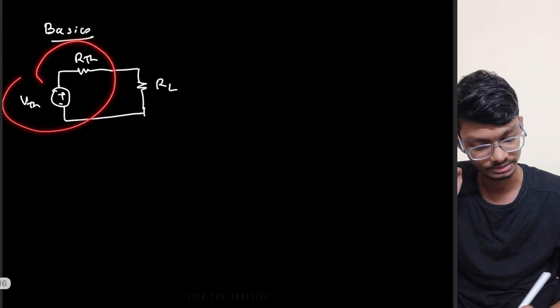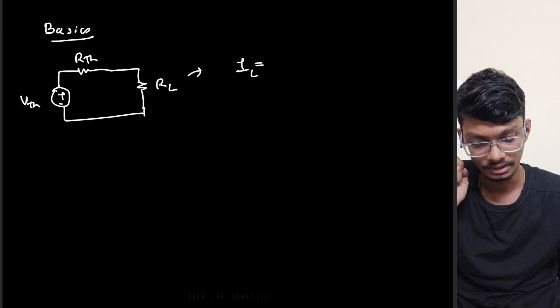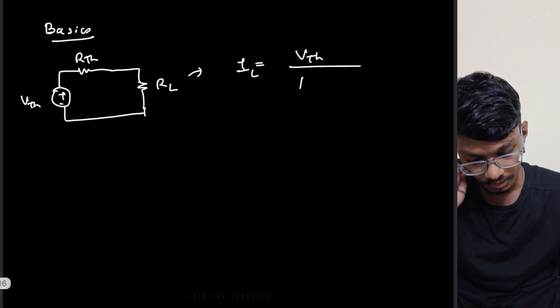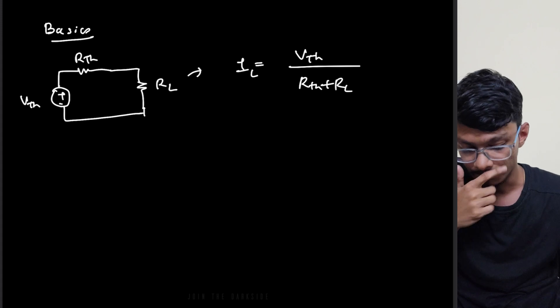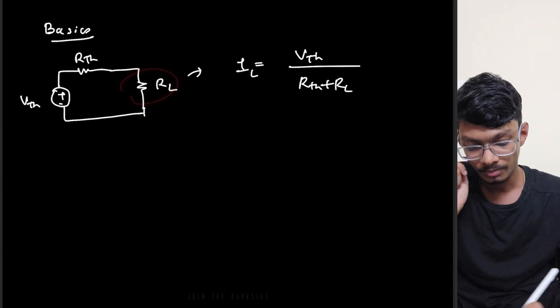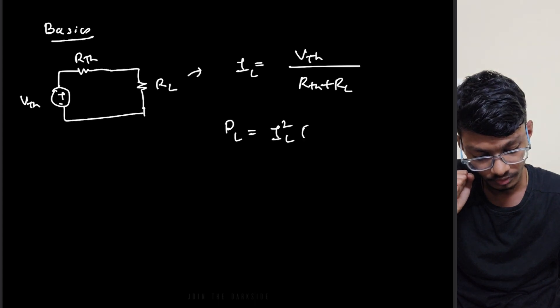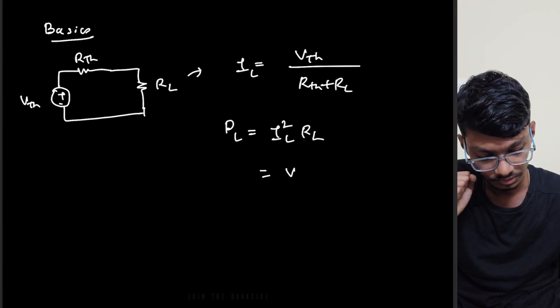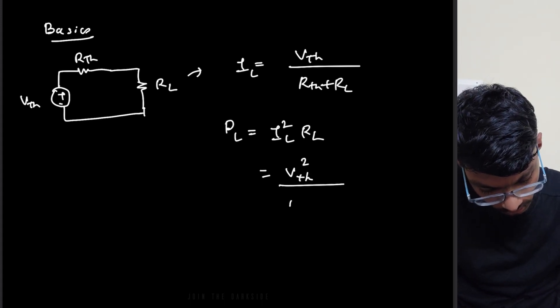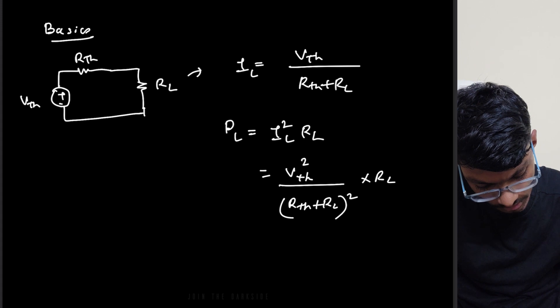Now let's calculate the current through this RL. What is IL? IL is Vth by Rth plus RL. Now for maximum power transfer, this IL has to be maximum. Now what is the power through this resistor RL? What is PL? It is IL square into RL which equals Vth square divided by (Rth plus RL) whole square times RL.